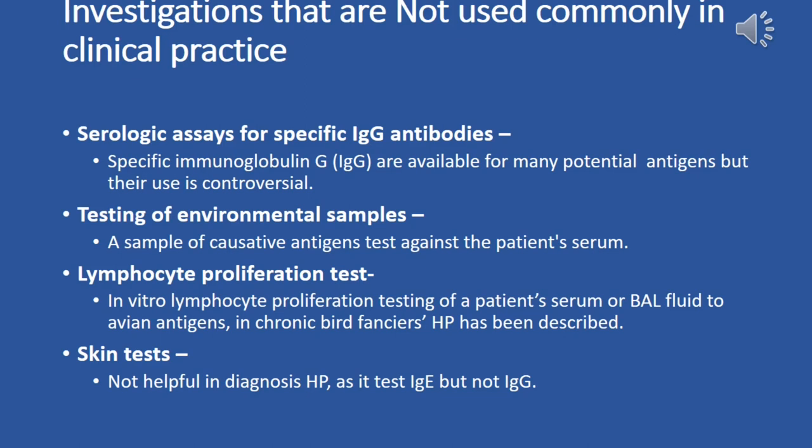Investigations not commonly used in clinical practice include serologic assays for specific IgG antibodies — although specific IgG assays are available for many potential antigens, their use is controversial and not routinely performed. Testing of environmental samples, which involves testing causative antigens against the patient's serum, is also not commonly used due to limited availability and uncertain clinical utility.